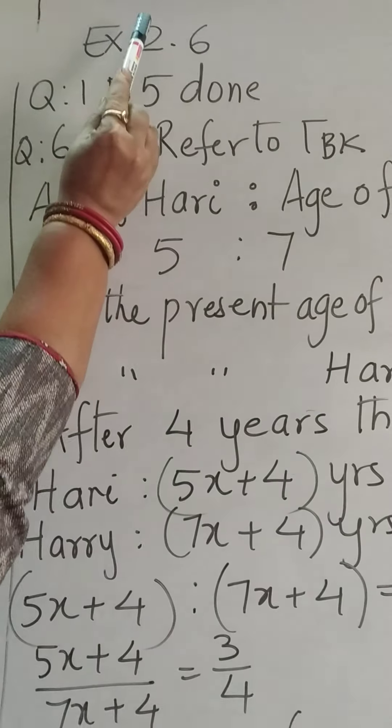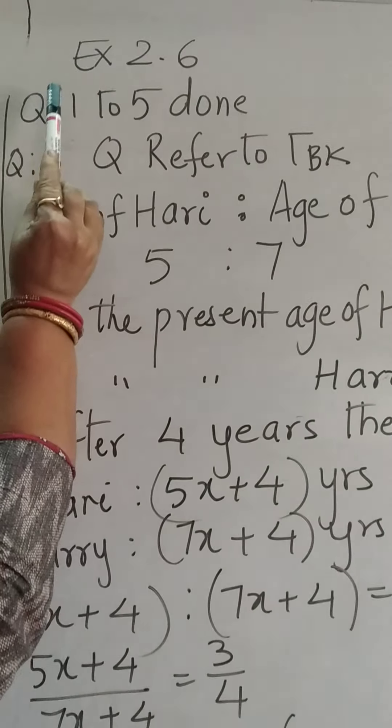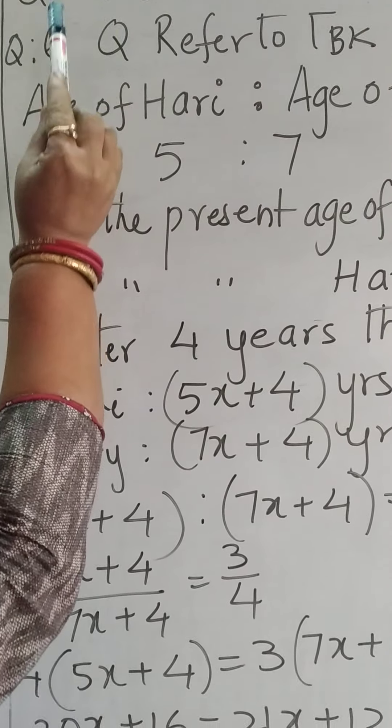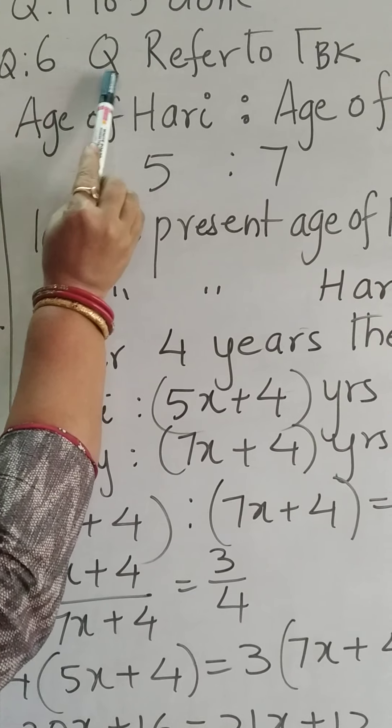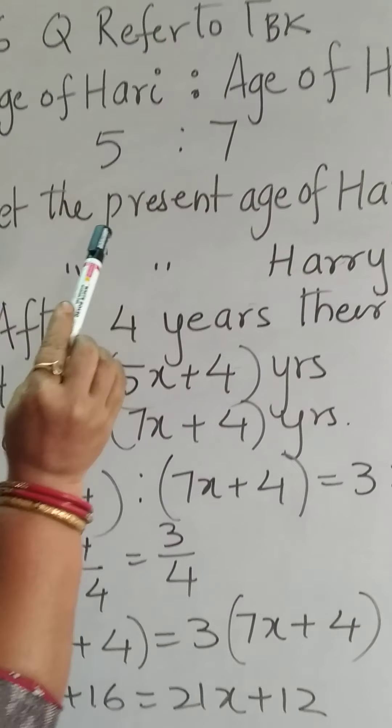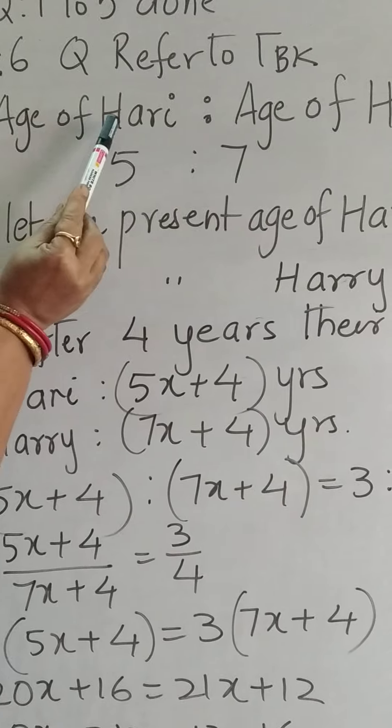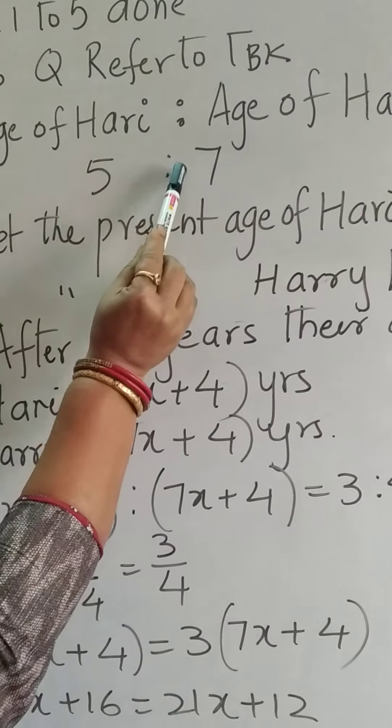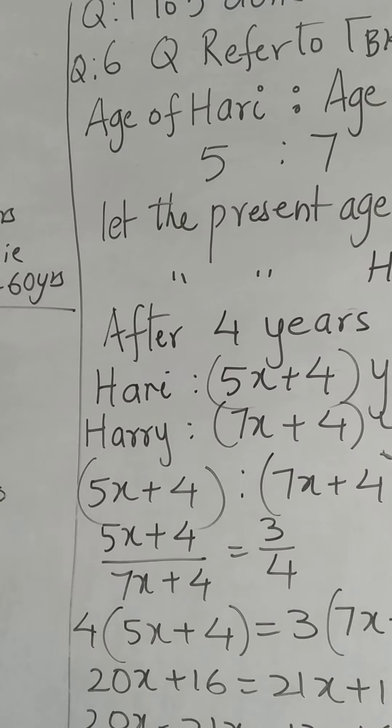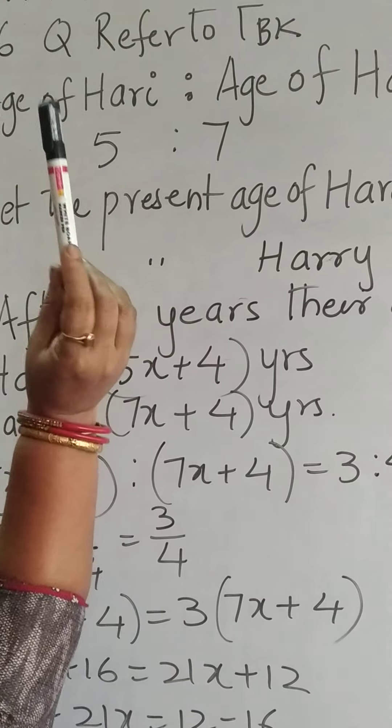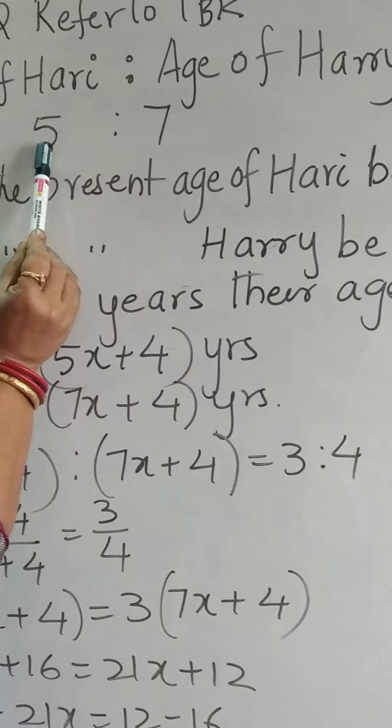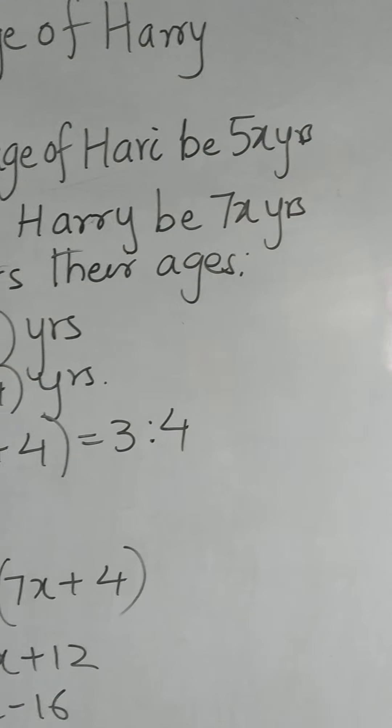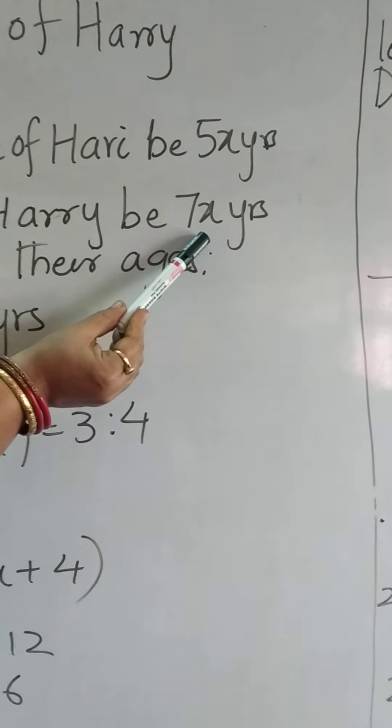Now we go to exercise 2.6. Question number 1 to 5 already done. Now we go to question number 6. Please read from the textbook. The ratio of age of Hari to Hari is 5 to 7. So let the present age of Hari be 5x years, Harry be 7x years.